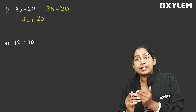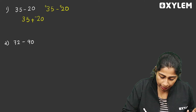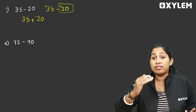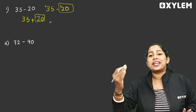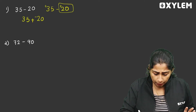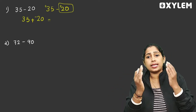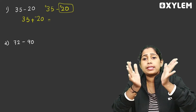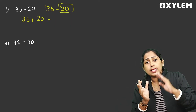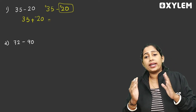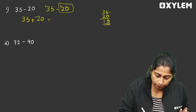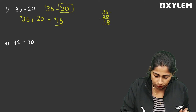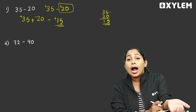Subtraction: take the additive inverse and add. If we add two different signs, we subtract the bigger number. 35 minus 20 — 35 minus 20 gives 15. That means 15. It gives you the bigger number's sign, which is plus. So we do subtraction, but we don't need to do subtraction — we don't need any other method.